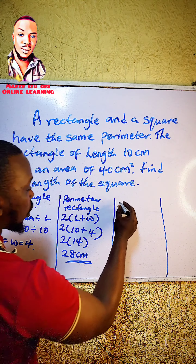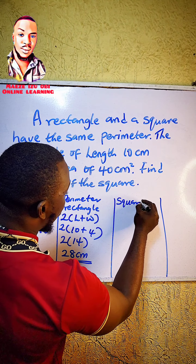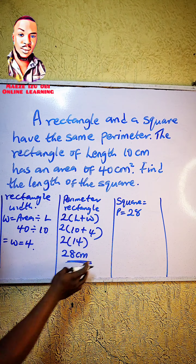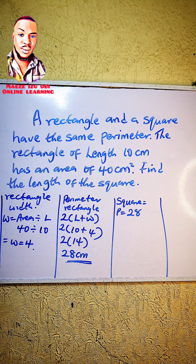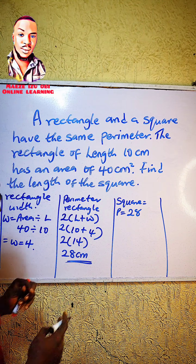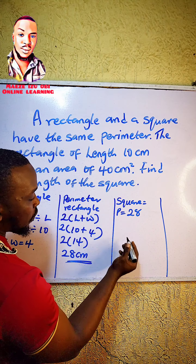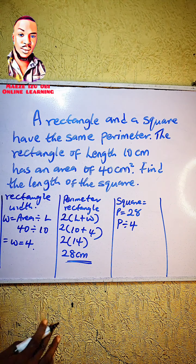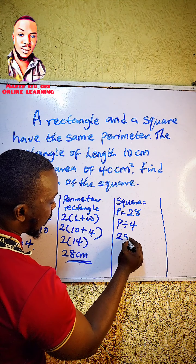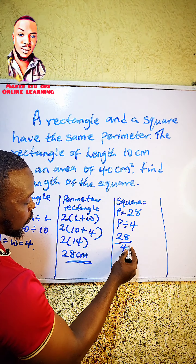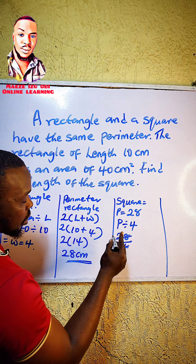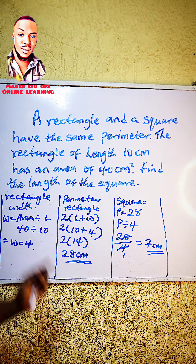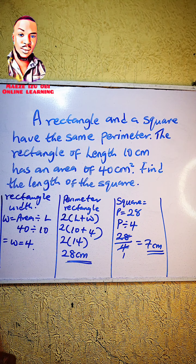Now we solve for the square. The perimeter of the square is 28 centimeters, the same as the rectangle. To find the length of a square, the formula is perimeter divided by 4. So 28 divided by 4 gives us 7. Therefore, the length of this square is 7 centimeters.